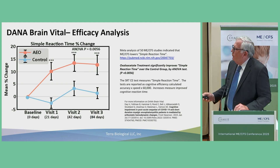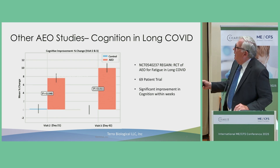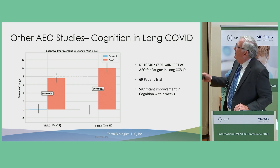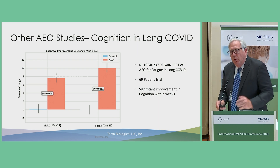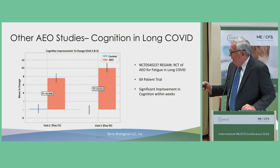We also ran a clinical trial in long COVID. With this cognitive function trial, again, with white rice flour we see about a 0% fluctuation from the mean. But with oxaloacetate, we see significant improvements in cognitive function, reducing one of the big things in ME-CFS and long COVID: brain fog.